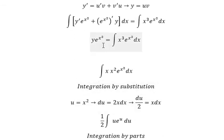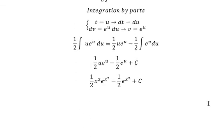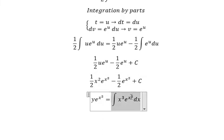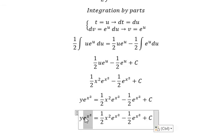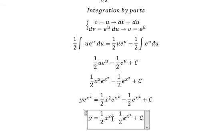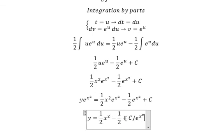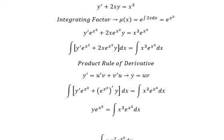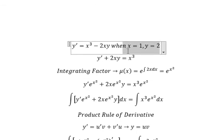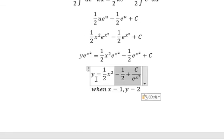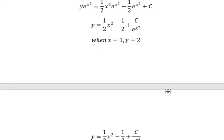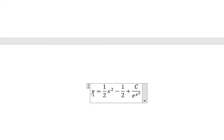Now we return back to the main equation. So we put this result in here. Next, we divide both sides by this one. Now we have the initial condition here. So we put x equals 1 and y equals 2 in here.